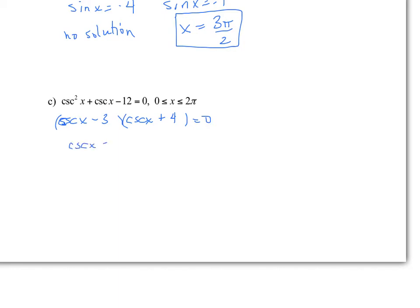Now we have cscx equals 3 and cscx equals negative 4. At this point, whenever I have that equation set, this is when I'm going to use the inverse trig function. I'm going to change this to sine — that's simple because I just flip the fraction. So sinx equals 1 third, and sinx equals negative 1 quarter. These are two equations where you can find the angle of reference and solve.